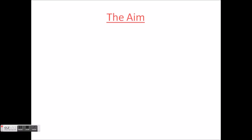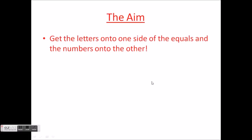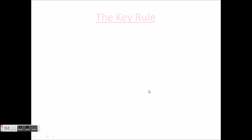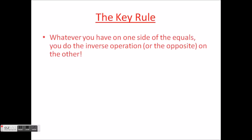Okay, so the aim of solving an equation is to get letters onto one side of the equals and numbers onto the other. But how do we do this? The key rule: whatever you have on one side of the equals, you do the inverse operation or the opposite on the other.